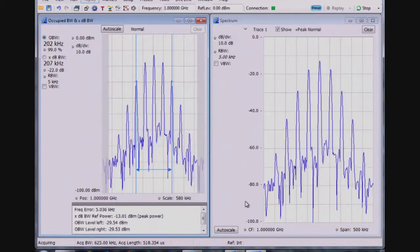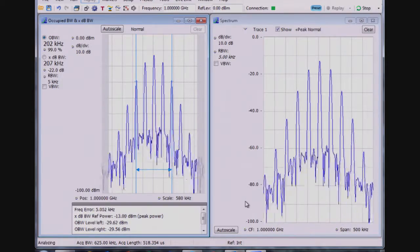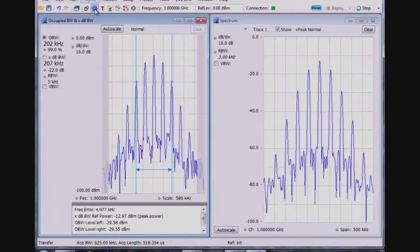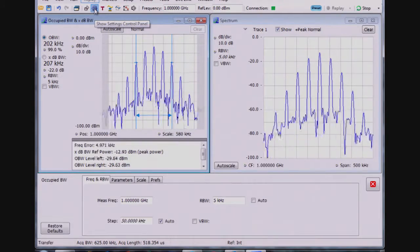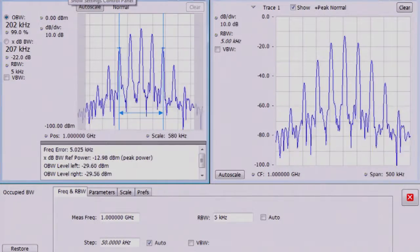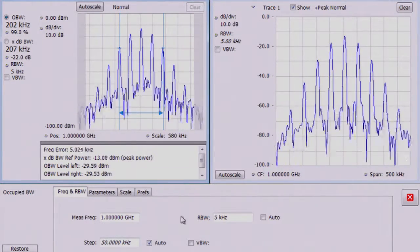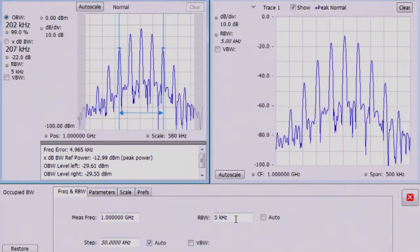I happen to already set this up, so if you look at the OBW settings, I select the gear icon on the upper left display of the software. Measurement frequency, center frequency, RBW is manually set by me to 5 kilohertz.